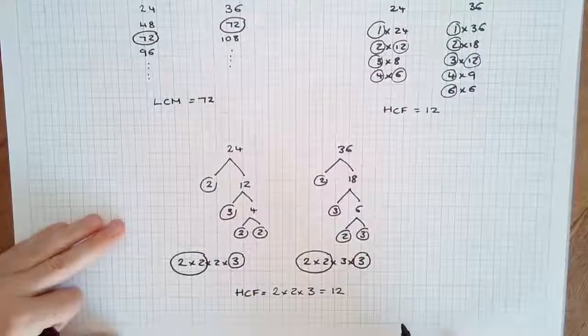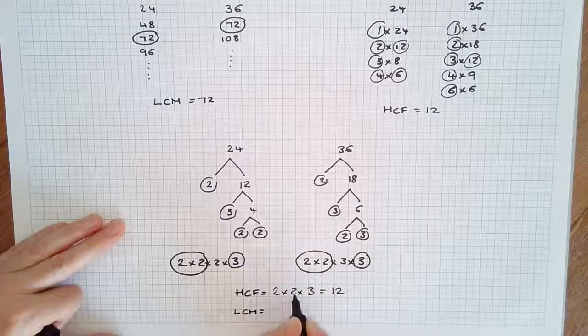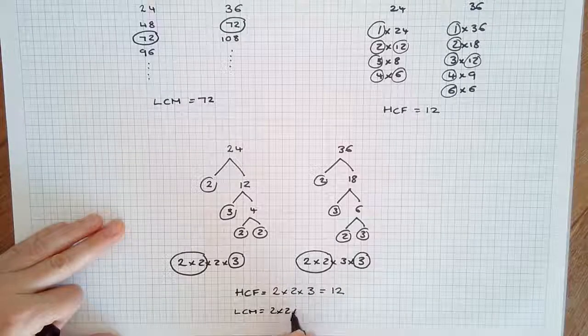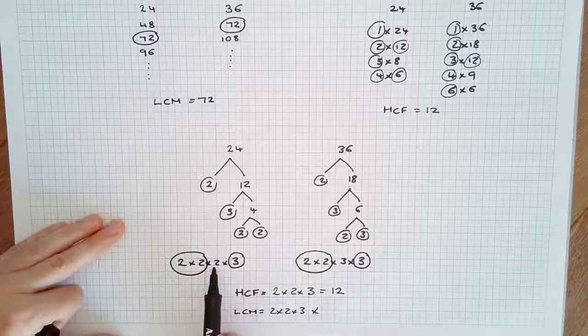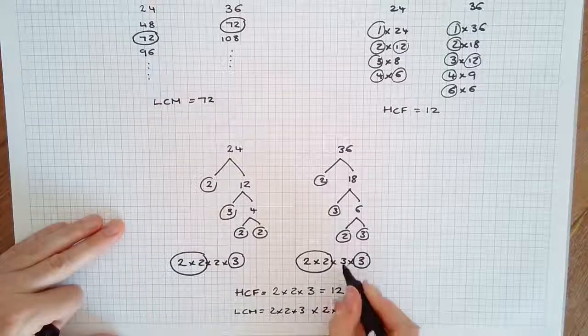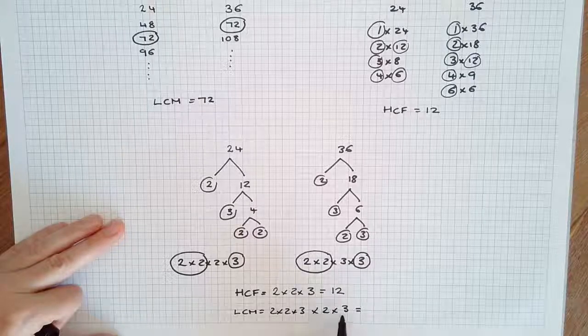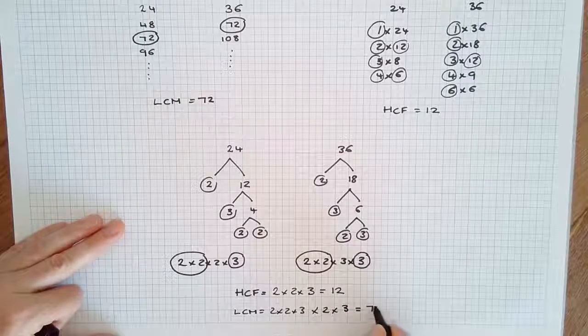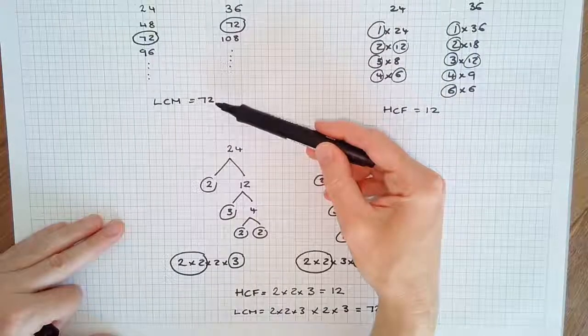The lowest common multiple is taking the highest common factor, 2 times 2 times 3, in prime factorization form, and then multiplying it with what we haven't circled. We haven't circled the 2 on the left, and the 3 on the right. 2 times 2 times 3, 12, times 2 times 3 is 72. This gives us the lowest common multiple, as we got earlier.